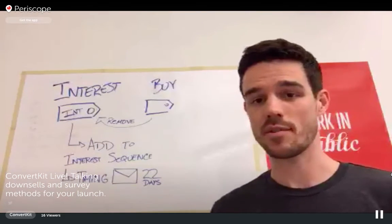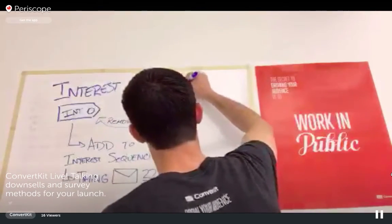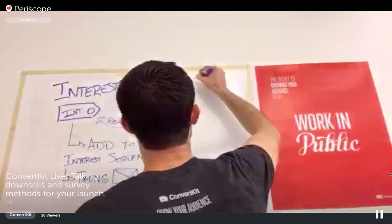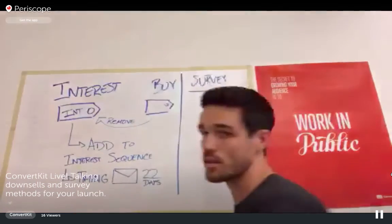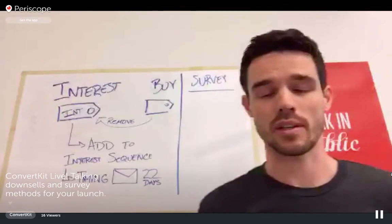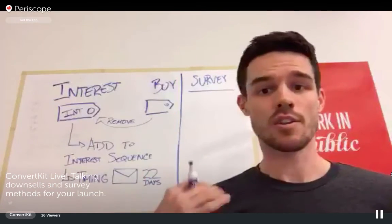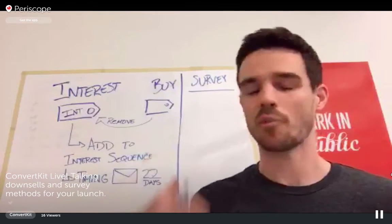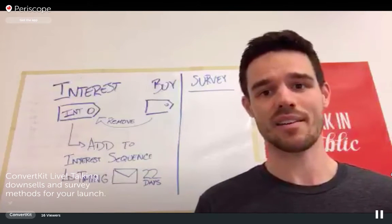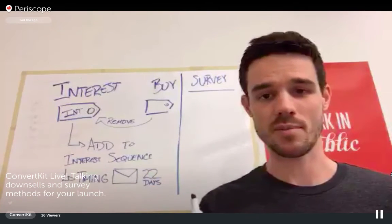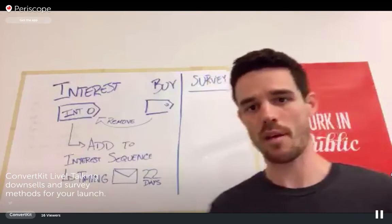A downsell or survey really only needs to be one or two emails. If people are interested and haven't bought, you do want to ask them one more time, but you don't want to keep hammering them with six, eight emails saying 'Hey, I saw you're interested.' One or two emails, especially if you're delivering specific value or giving them another option, is totally fine. For the survey, the big things are asking them why they didn't buy, what were the objections, what were the drawbacks, was anything not clear, and is there something they were looking for that they didn't get.